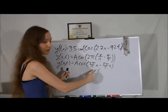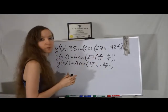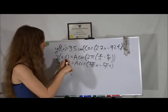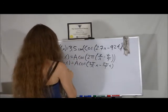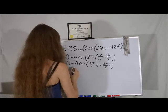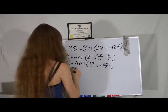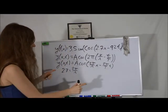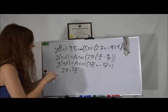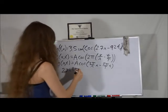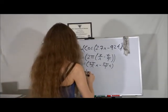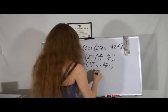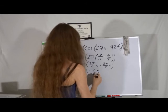So if we look at the coefficient in front of x in this expression and in this expression, we know those have to be the same thing. So this means that 2.7 is equal to 2 pi over lambda. So if we want to know what lambda is, we're going to multiply both sides by lambda, divide by 2.7, and this tells us that lambda is equal to 2 pi over 2.7.